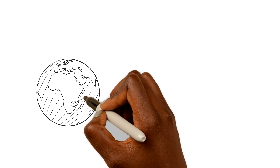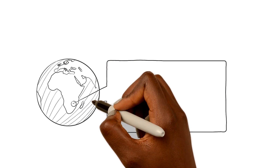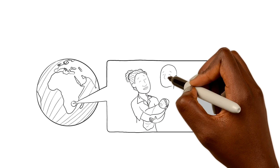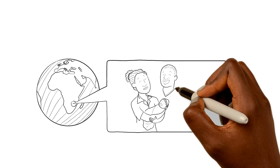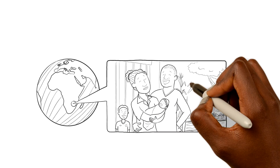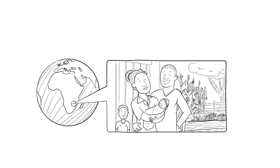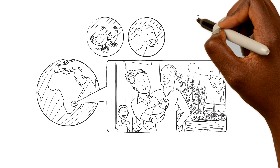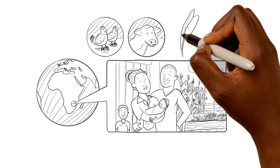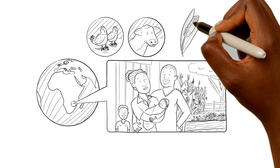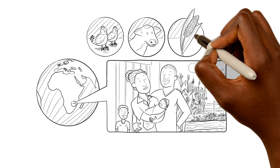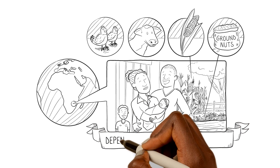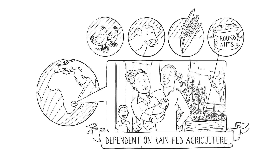Let's travel to Zimbabwe. Meet Jane, a 25-year-old farmer who lives with her husband and their two young children. She owns some chickens, a cow, and farms on a small plot of land where she mainly grows maize and groundnuts, so the family is fully dependent on rain-fed agriculture.